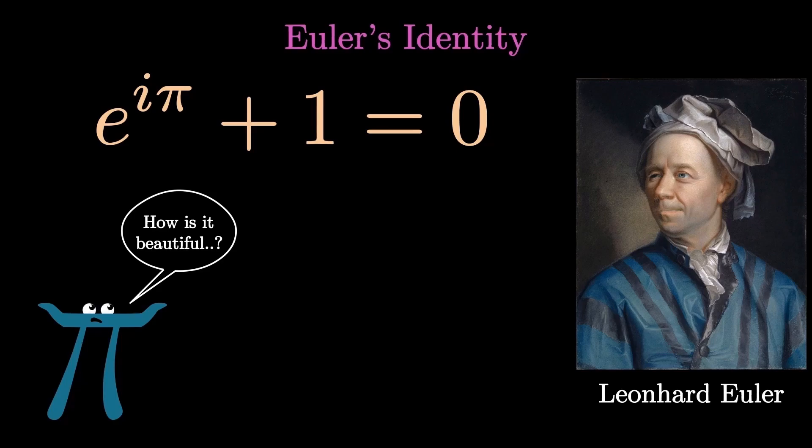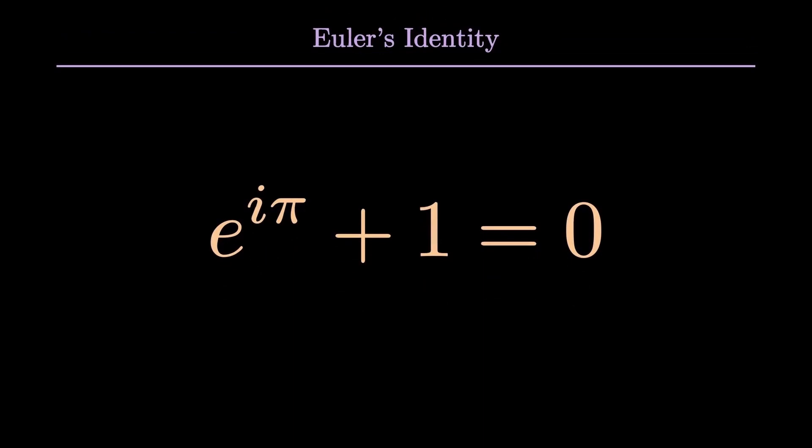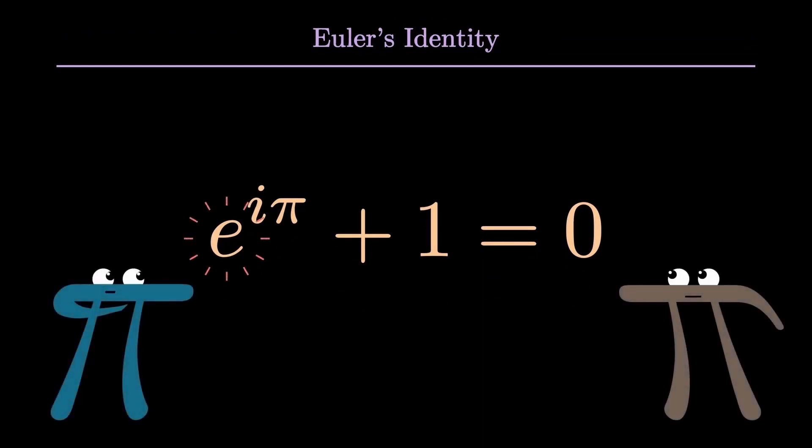And if you're wondering how is it beautiful, let's take a look. It contains some of the most beautiful mathematical constants, starting with Euler's number e, the imaginary unit i, π, the multiplicative identity 1 and the additive identity 0.